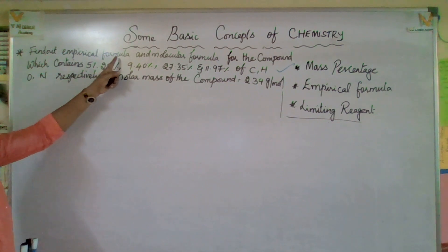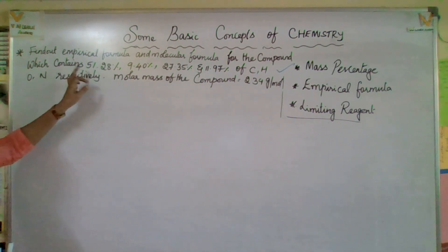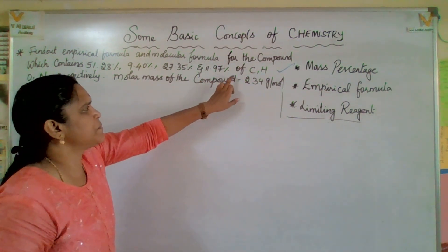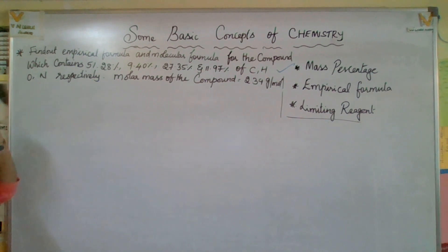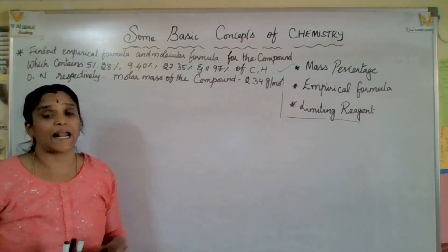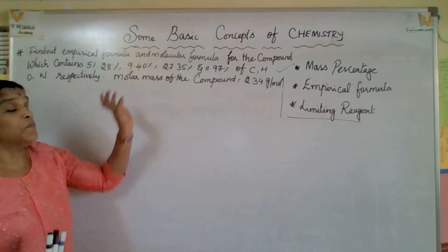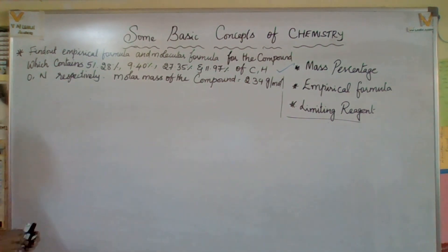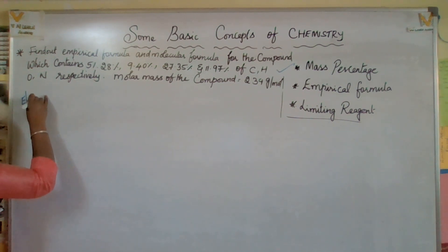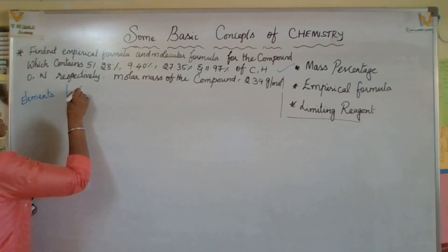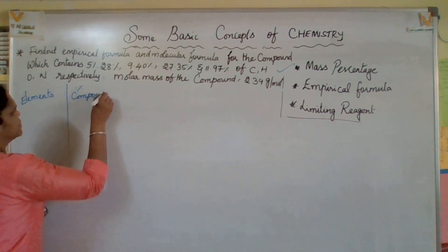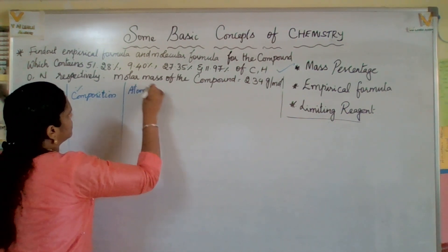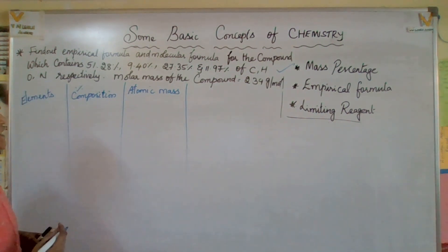Next problem: find the empirical formula and molecular formula of a compound containing 51.28% carbon, 9.40% hydrogen, 27.35% oxygen, and 11.97% nitrogen. The molar mass of the compound is 234 gram per mole. We need to find both the empirical formula and molecular formula.